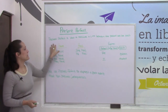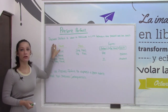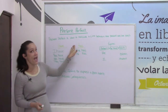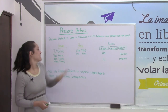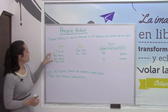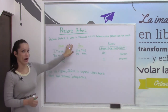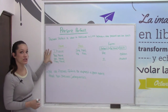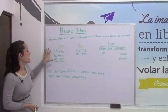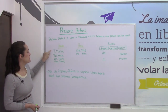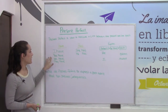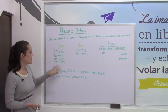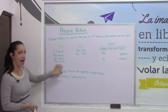When we're using present perfect, we will either be using 'have' or 'has.' To know whether we're going to choose have or has depends on the subject that we're using. If we're using I, you, we, or they, we use 'have.'